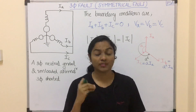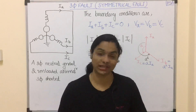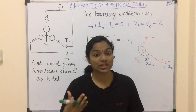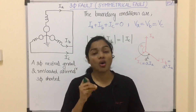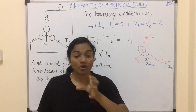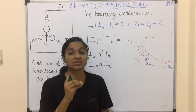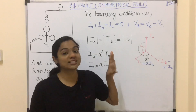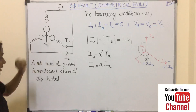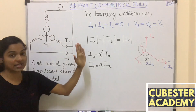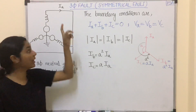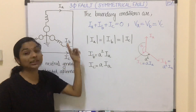Welcome to today's video. We are going to discuss three-phase fault, also called symmetrical fault or balanced fault. Previously we discussed line-to-ground fault, double line fault, and double line-to-ground fault — all under unsymmetrical fault. Here it is a symmetrical fault because the magnitude of voltage and current will be the same in all phases. In three-phase fault, as shown here, we have a neutral-grounded unloaded alternator, and all three phases A, B, and C will be shorted.